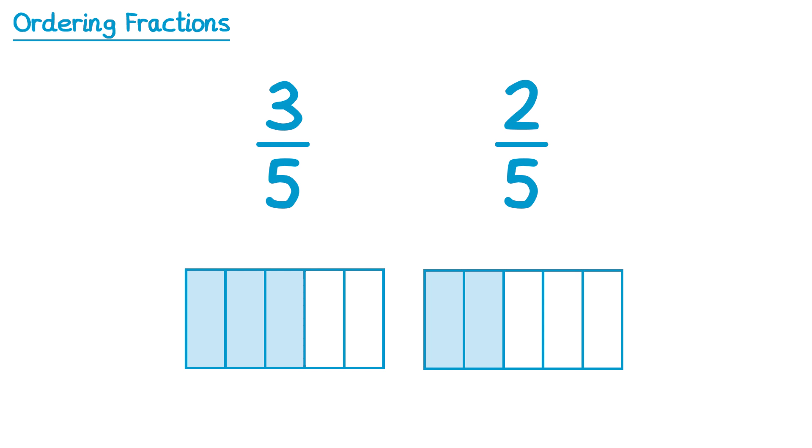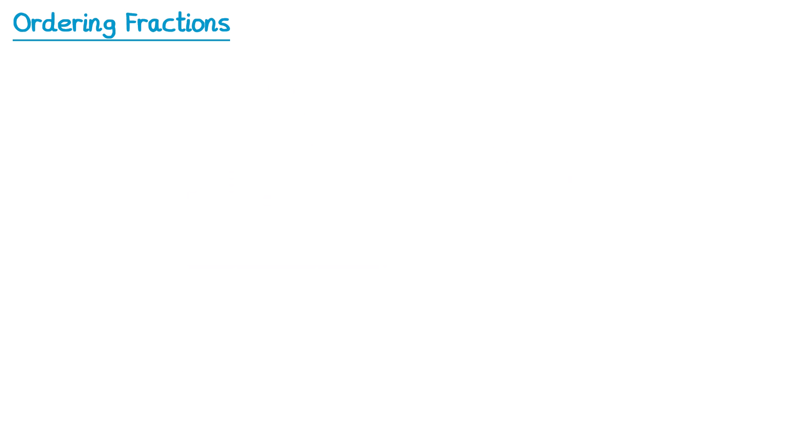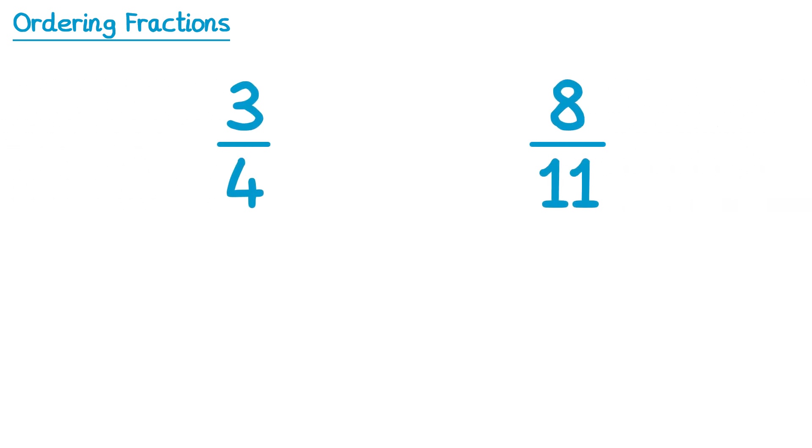So you can see that 3 fifths is more than 2 fifths because we've shaded in more. For this question, it's easy to spot which fraction is bigger because the denominators are the same number. But what if they're not the same? What if we need to work out what's bigger out of 3 quarters and 8 elevenths?